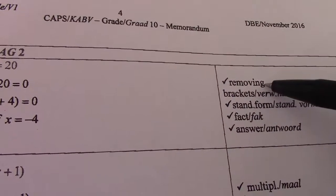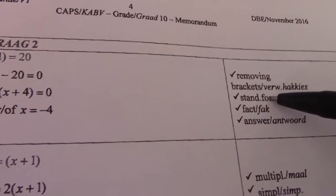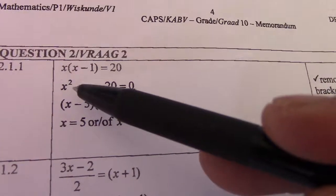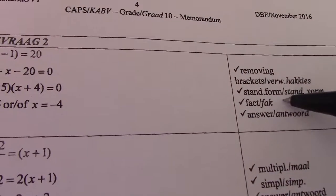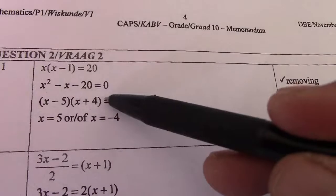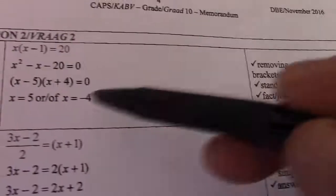So one mark for removing brackets using distributive law. One mark for standard form, meaning we write it x squared, x, and then constant term. One mark for factorization, and one mark for your answer.